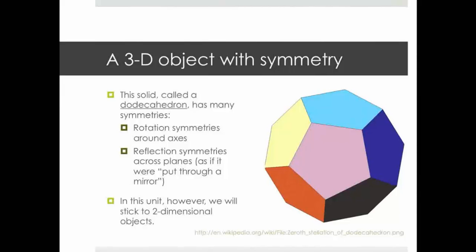There are also reflection symmetries across planes. What I'm saying is that we can cut this with a plane so that would look exactly as if it were being reflected through a mirror. Now those are all very interesting, but in fact, they're so complicated. This study of three-dimensional symmetry is so complicated that in this unit, we're not going to look at anything in three dimensions. We're going to stick purely to symmetry of two-dimensional objects.